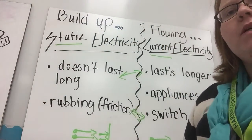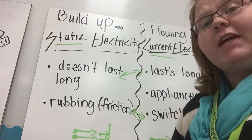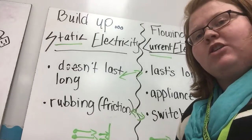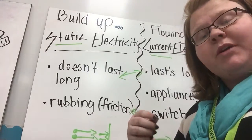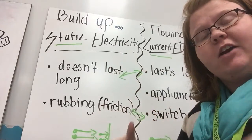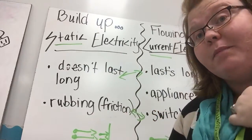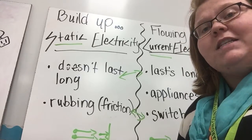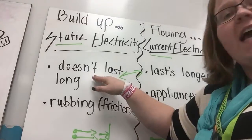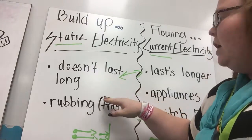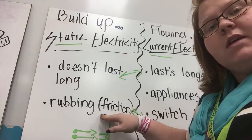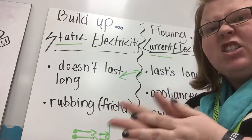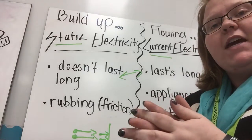Let's look at the build up — the build up of electricity. The build up of electricity is actually called static electricity. That's what you see especially in the wintertime when you're putting on your clothes and your hair starts standing out. Static electricity is a build up of electricity that doesn't last very long, and it's caused by friction — some type of rubbing together that makes those electrons get agitated and create that electricity.